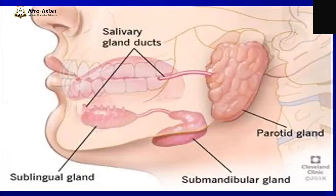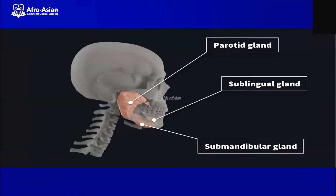These are the major glands: the parotid with its duct, the submandibular with its duct, and the sublingual gland. The largest one is the parotid. Next in size is the submandibular, which lies below the mandible, and then the sublingual, which is below the tongue.